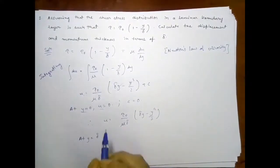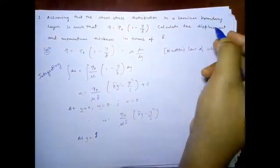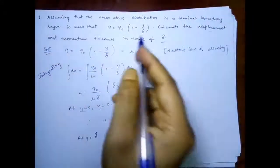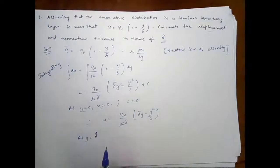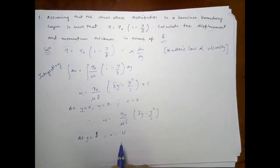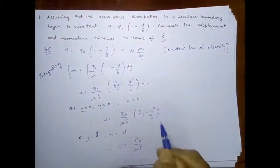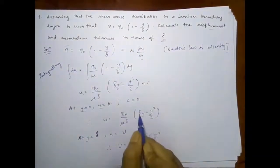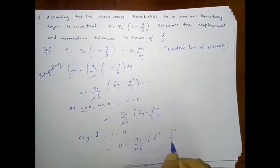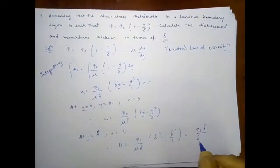At y = δ (the maximum boundary layer thickness), u = U. Therefore: U = (τ₀/(μδ))(δ² − δ²/2) = τ₀δ/(2μ).